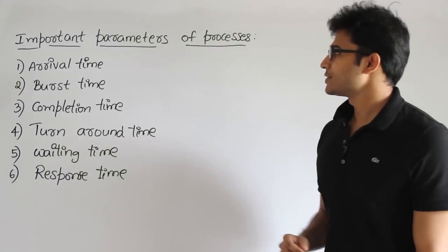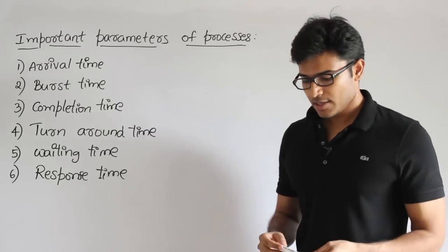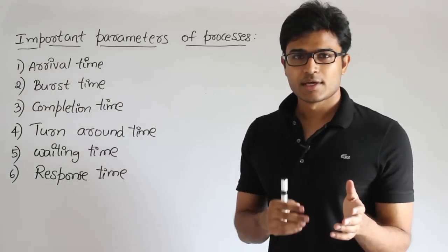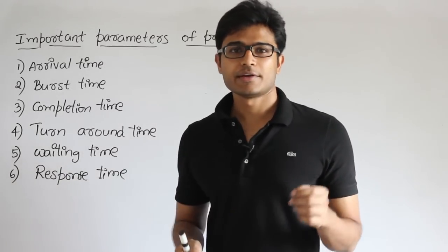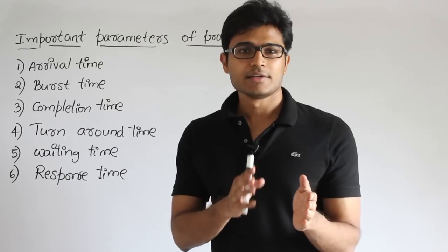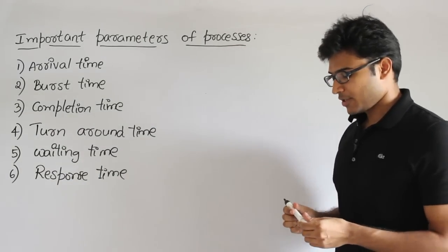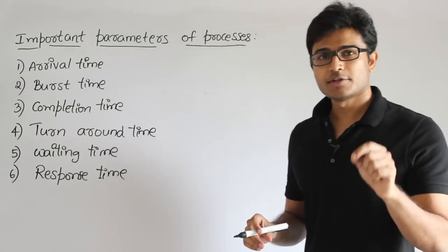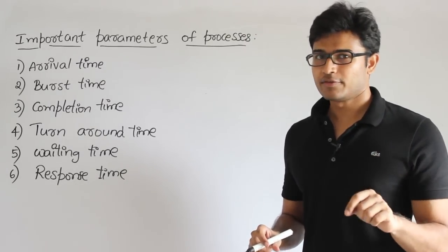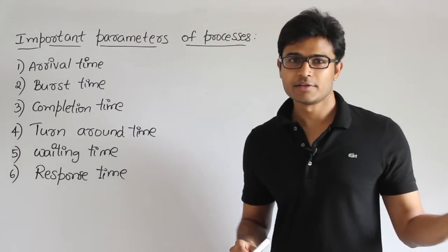Let's see the parameters of a process. These are all the times which are important. What is arrival time? Whenever any process gets into the ready queue, that is what we call arrival time — the time at which it is ready to be executed. The time at which a process enters the ready state is called arrival time, also called the ready queue, because all processes are going to wait in the ready queue.